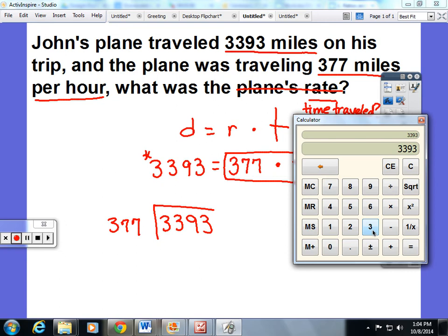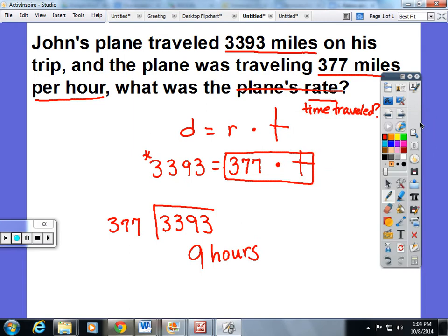3,393 divided by 377 is 9. This plane traveled for 9 hours to travel 3,393 miles.